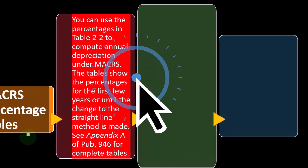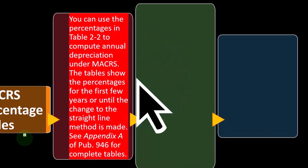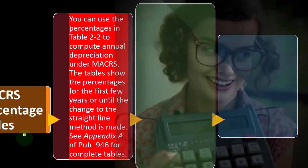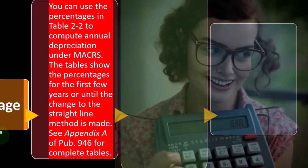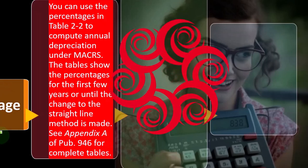When you do a double declining method, you basically calculate the double declining. The calculation doesn't work perfectly until the straight-line is higher than the double declining method would be. Then you switch over to straight-line, and you kind of fudge the last year to make it work because it's not the most precise, elegant calculation of a method. But it works.